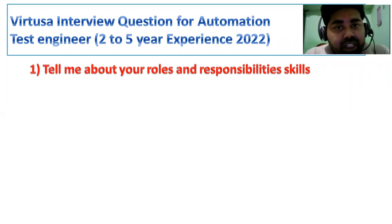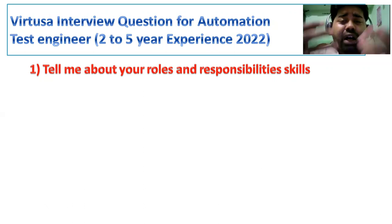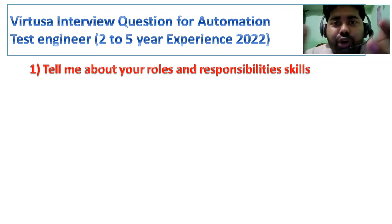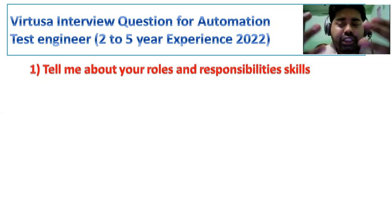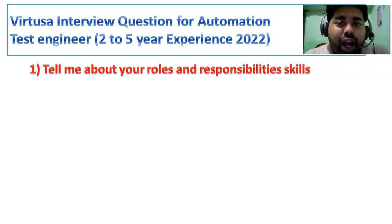For roles and responsibility in your current project: basically we follow Agile process and we have two-week sprints and four-week sprints. Every release you get some requirements for testing. If it is a complete automation project, you have to automate manual test cases using your framework. If it is manual, you create scenarios, write test cases, execute them after deployment, raise defects if found, and collaborate with the developer.